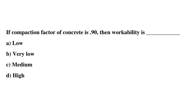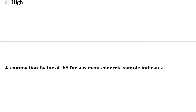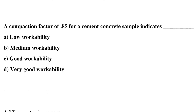So the correct answer is option C, medium. So next question: a compaction factor of 0.85 for the cement concrete sample indicates — option A: low workability, option B: medium workability, option C: good workability, option D: very good workability. So the correct answer is option A, low workability.